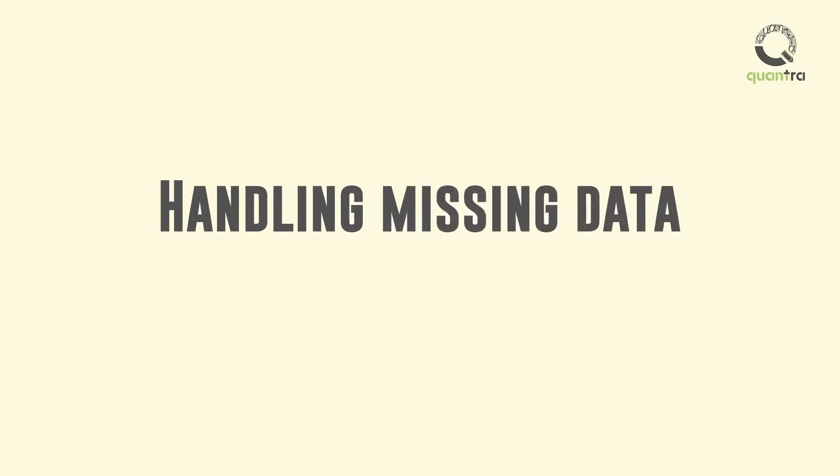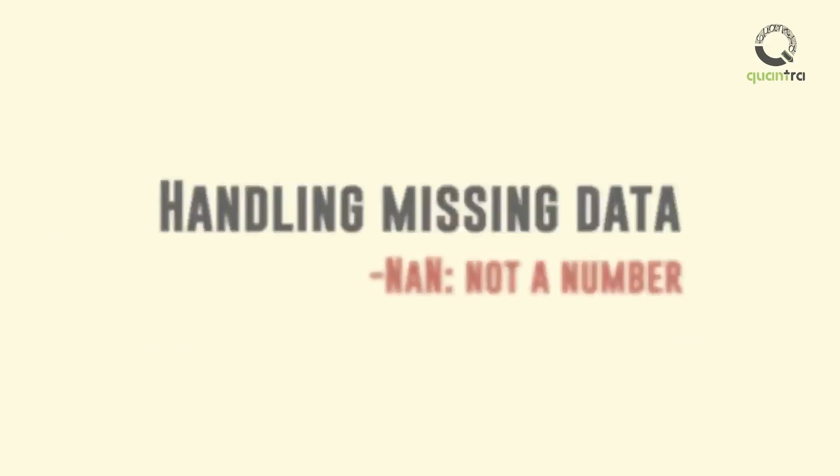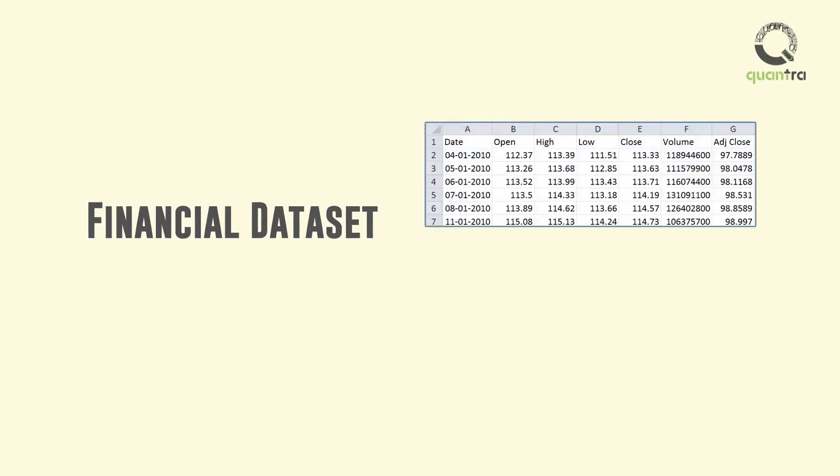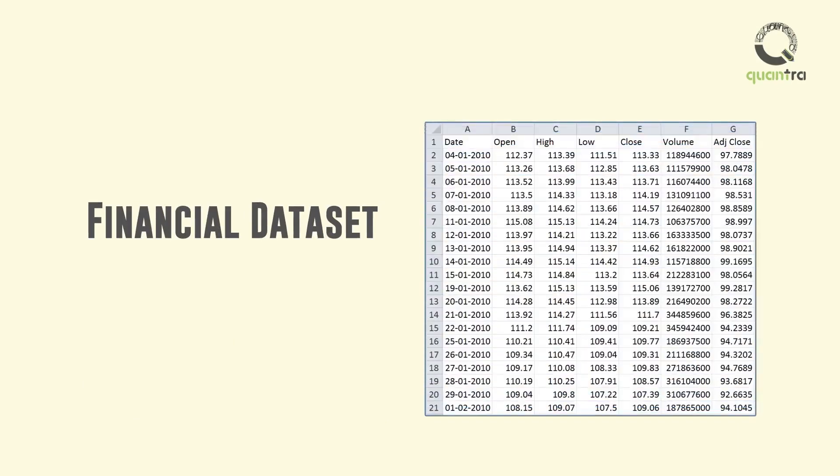The most common type of error seen in financial data is the presence of non-numerical data entries, or NaN or not a number. A financial data set contains numerical data for each of the column headers, except for the date field which stores all the trading dates for the particular security.